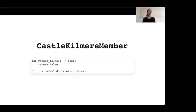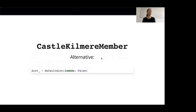We can now create our defaultdict, providing it with the return_false function as the default factory. Alternatively, we could also use a lambda expression, which would result in the same behavior. However, since we are not discussing lambda functions today, I will stick to normal functions for now.